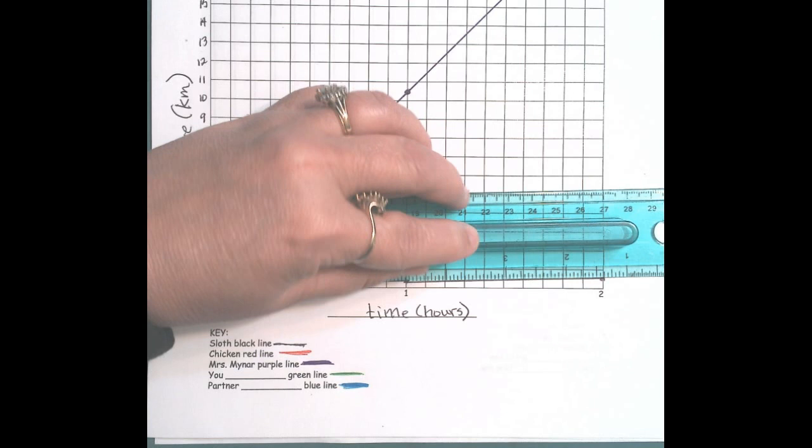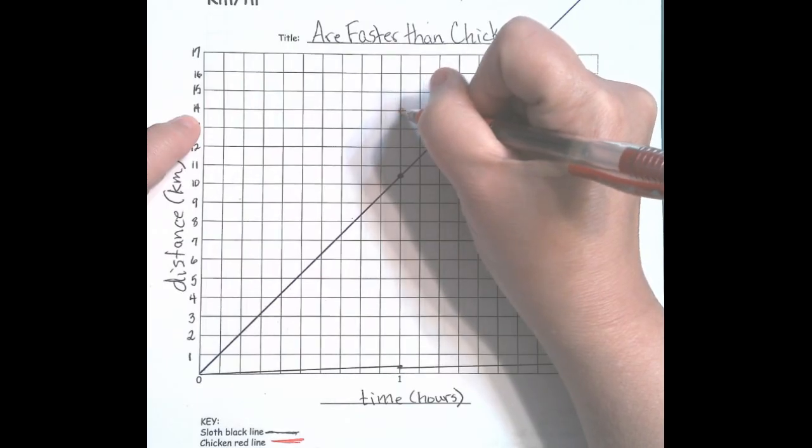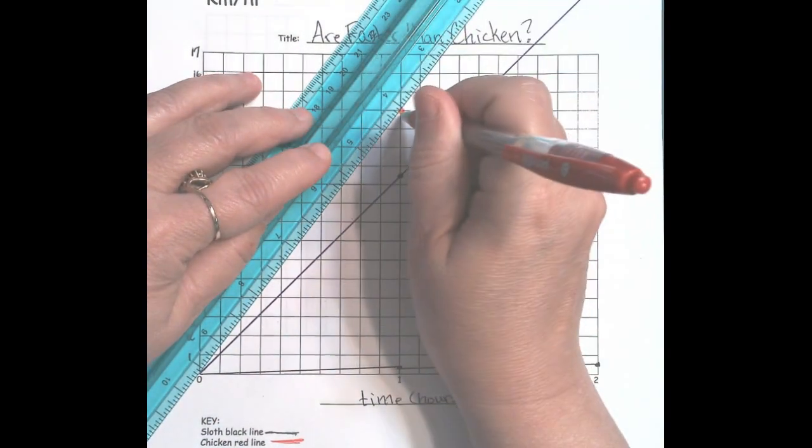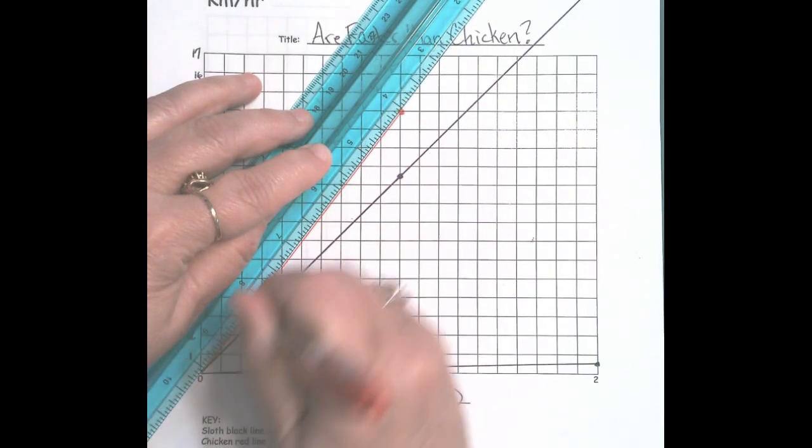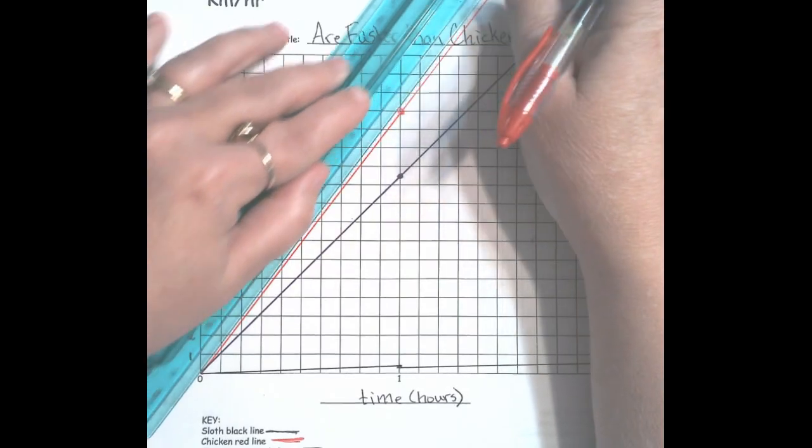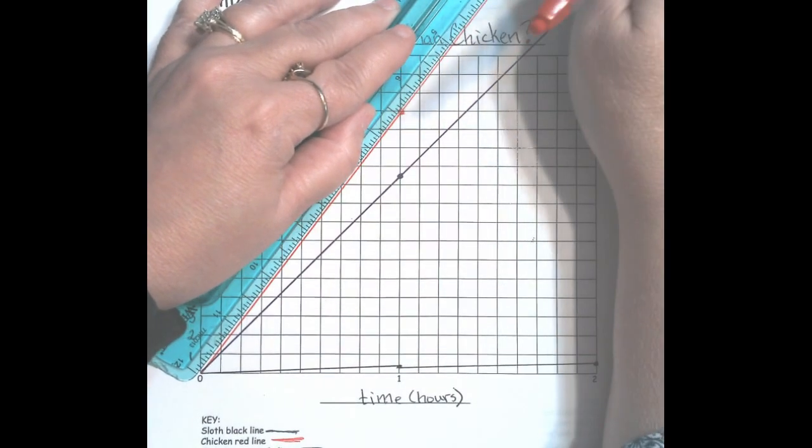I want you to try to do the chicken. The chicken's data is 14 kilometers in one hour, so we find our one hour, here's 14, and we put our data point here. Then through the origin, and if we were to continue going, it would go off the chart here because 28 is definitely more than the 17 that we have.